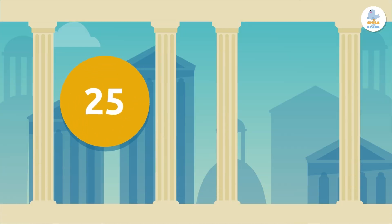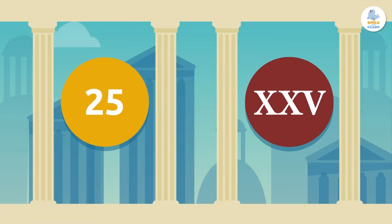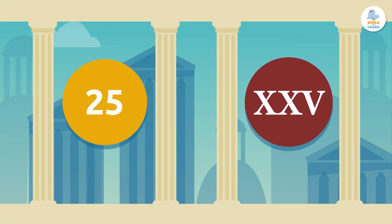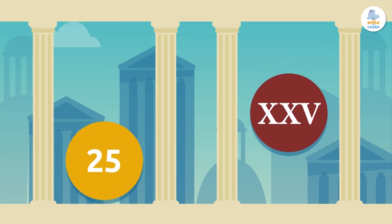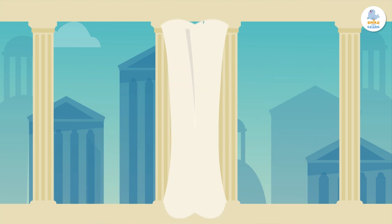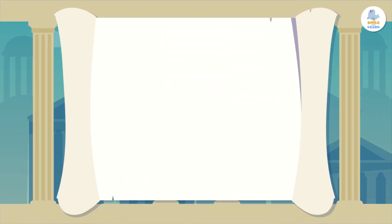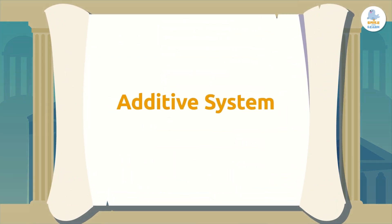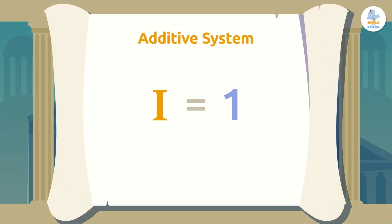What do you think — is the numbering system we use today the same as the Roman numbering system? No, of course not! In the ancient Roman Empire, the numbering system was additive. This means that each letter has a fixed value.